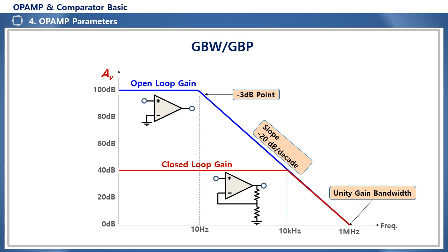Each op-amp has its own unique GBW value. When the gain is high, the covered frequency band decreases, and when the gain is low, the covered frequency band widens. An op-amp with a very large GBW is called a wide band op-amp. When designing an op-amp amplifier, the gain and frequency of the applied signal should be considered based on the GBW. For high-gain amplifier designs, a cascade structure using multiple op-amp stages in series is used to secure the required frequency bandwidth.